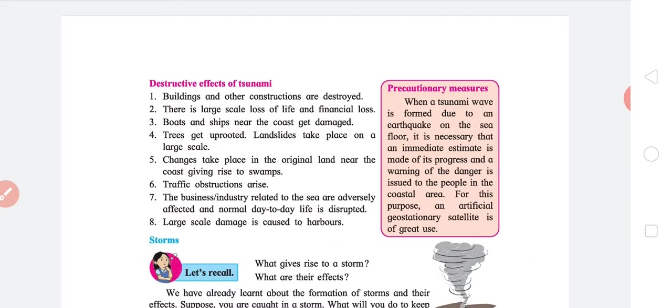Sixth, traffic obstructions arise because there is everything blocking it. Seventh, the business or industry related to the sea are adversely affected and normal day-to-day life is disrupted. This is naturally because it makes sense. If there is tsunami, the waves are too high, the sea is not calm, and if sea is not calm, everything is destroyed. Eighth, large scale damage is caused to harbors because harbors are the first contact where the tsunami comes. So harbors feel the impact of tsunami in the worst possible way and they are actually damaged.